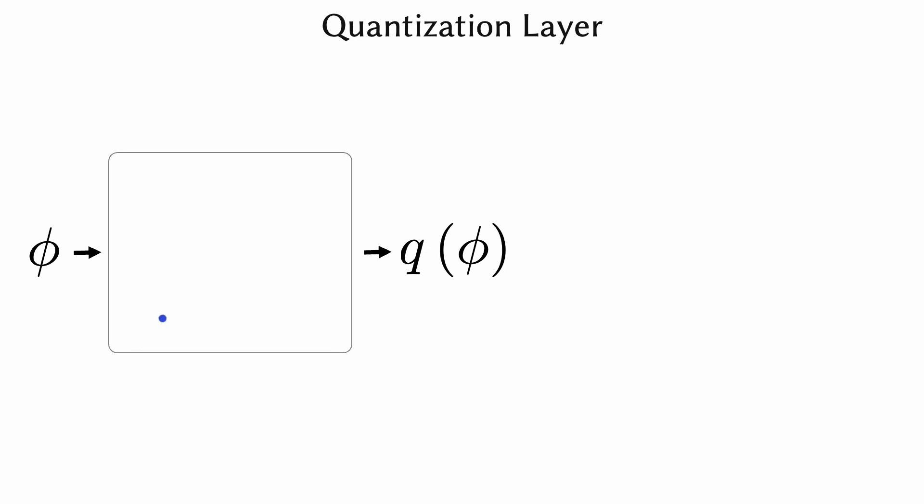Previous CGH methods assume continuous phase and quantize only at the very end. While this naive approach works for liquid crystal type SLMs, it does not work as well with highly quantized SLMs. On the right, we plot the simulated image quality with 8 frames on a 4-bit SLM using this naive approach.